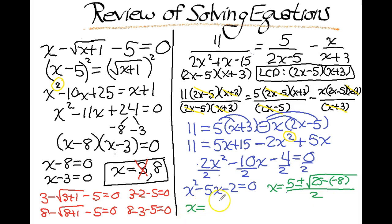So let's go ahead and finish that off. x equals 5 plus or minus the square root of 25 plus 8 is 33 all over 2. And those are my final answers.